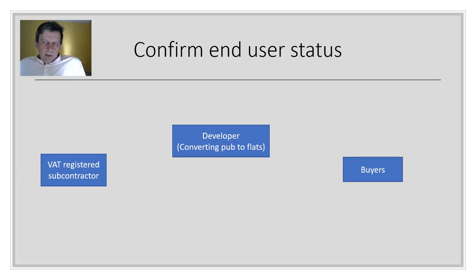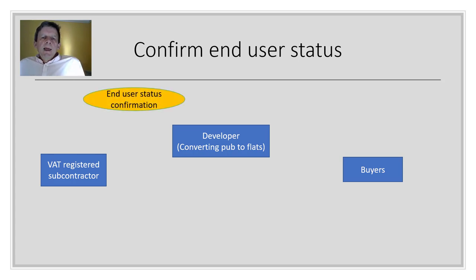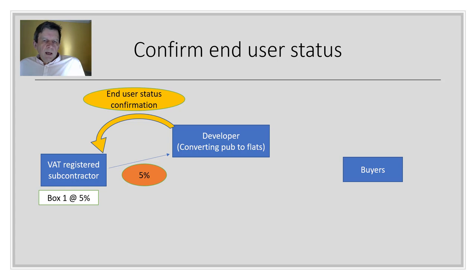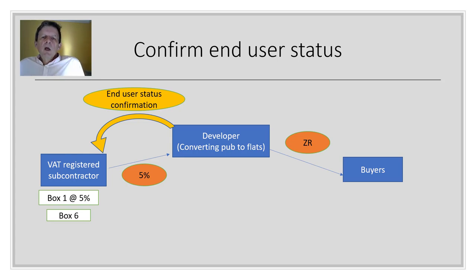For example, a VAT-registered subcontractor doing conversion work for a developer converting pubs into flats: if the developer confirms end user status in writing, the subcontractor behaves normally — charging VAT at 5% on qualified conversions, putting the VAT in box one and the net in box six. When the developer sells the flats to buyers, the sale is zero-rated, giving them the ability to recover the VAT on the 5% charge in box four, and they put the net in box seven.